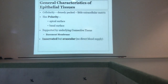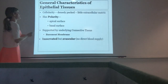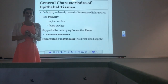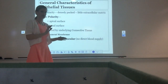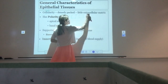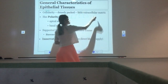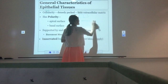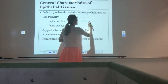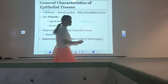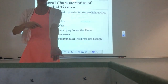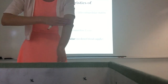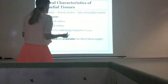Epithelial tissue has a few key characteristics. One: it has a high degree of cellularity — it's got a bunch of cells jam-packed together right up against each other, not a lot of extracellular matrix. The cells might be flat but you'll see them layered on top of each other, one after the next. This is because epithelial tissue is a barrier — it wouldn't be a very good barrier if cells were scattered; you need them jam-packed closely together.